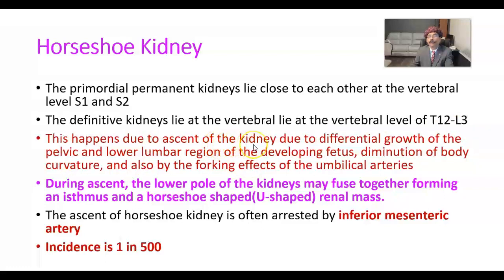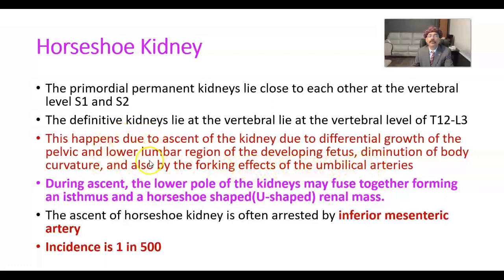The kidneys are initially pelvic organs. They ascend to the posterior abdominal wall at a level between T12 and L3. This happens due to differential growth of the pelvic and lower lumbar region at the end of the embryonic period, diminution of body curvature of the developing fetus, and also by the forking effects of the umbilical artery. These are the possible mechanisms of ascent of the kidneys, and the kidneys become retroperitoneal structures.